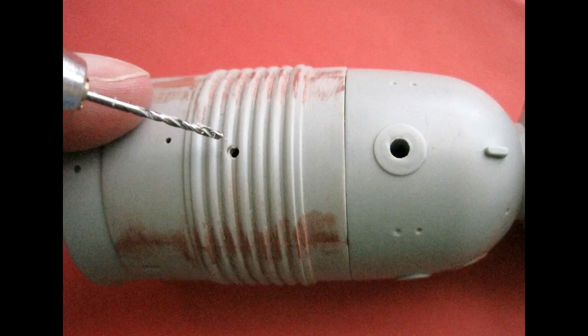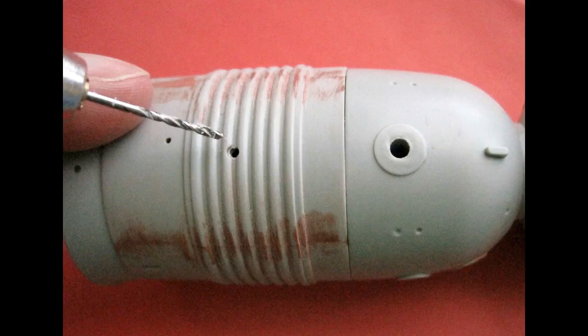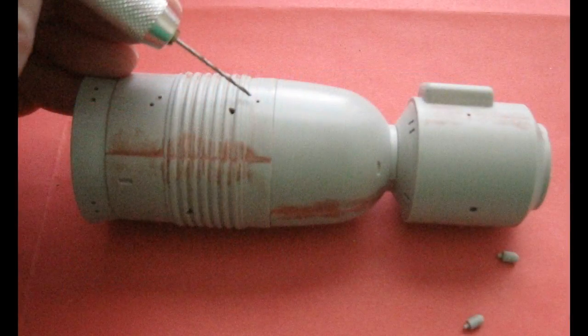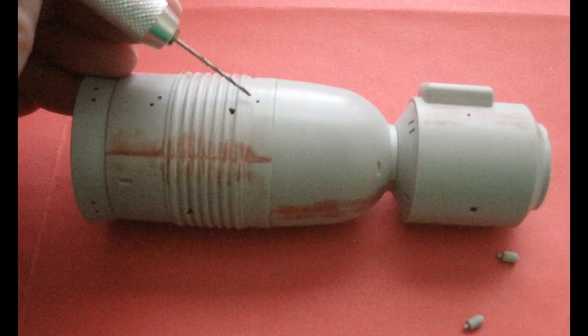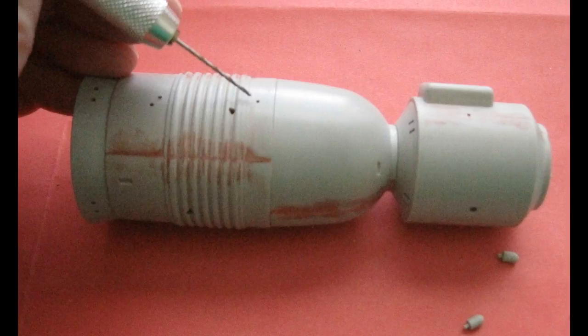Some of the holes that accept the external pieces on the command module need to be enlarged a little bit for those parts to fit. I just test fit the parts before being glued. And then I just used a pin vise to enlarge the holes to the right size, using the hobby drill that was just right, until I got a good fit from the mating part.